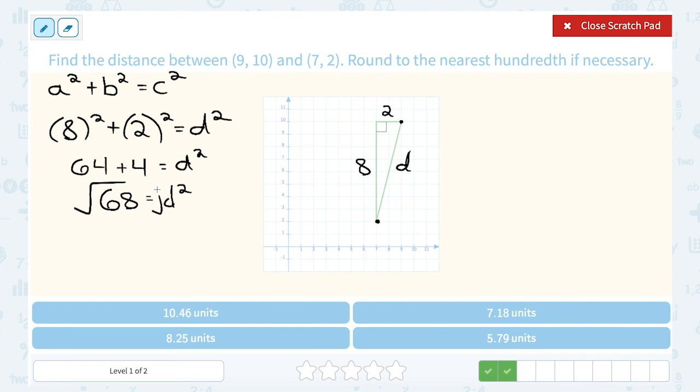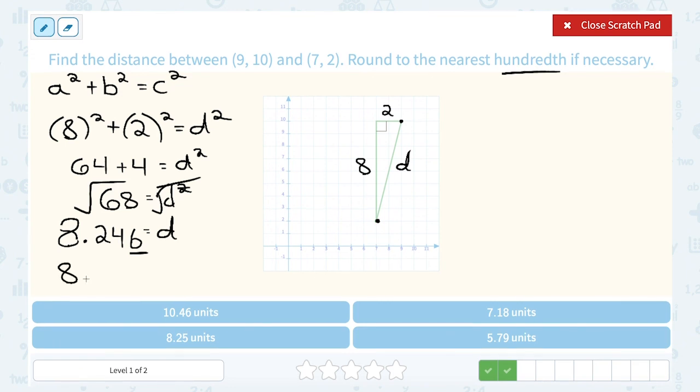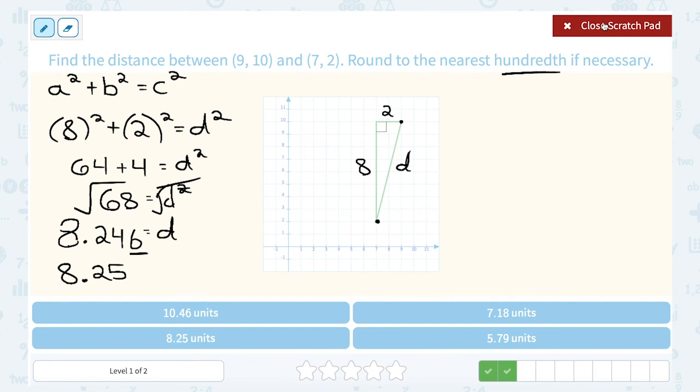And then to get d by itself, I'm going to take the square root of both sides. Square and square root cancel, leaving me with d. And on the other side, since 68 is not a perfect square, let's take our calculator, the square root of 68. And that's going to be 8.246. And then it keeps going, but that's going to be enough for me to round it. Since we're rounding to the nearest hundredth, I want to round to two decimal places. Now notice, after my second place, I have a 6, so that 4 is going to round up to a 5. So I'm going to round this to 8.25. And of course, my answer is in units.